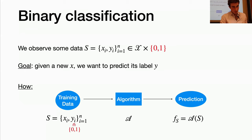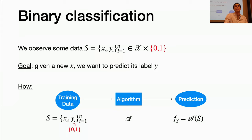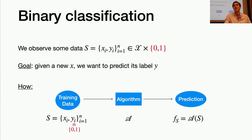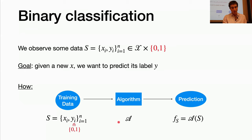Let's recall the setting of binary classification. In supervised learning you have a dataset S consisting of observations (xi, yi) for i from 1 to n. Your input x belongs to some set X and your label y belongs to a discrete set. In binary classification today, yi belongs to {0, 1}. The goal is: given a new observation x, predict its associated label using a classifier learned from the training data.